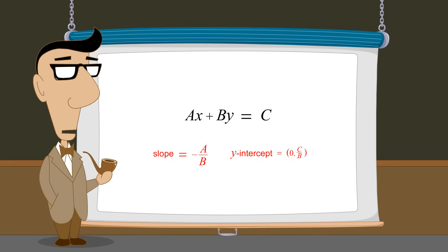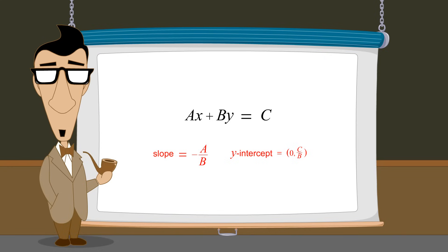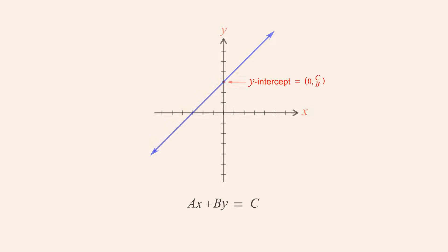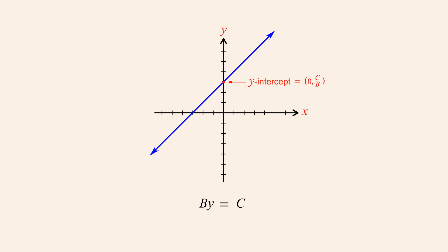We now have expressions which tell us the slope and y-intercept of a line written in standard form. But there is another method by which we can determine both the x and y-intercepts. We know that the y-intercept's x-coordinate is always zero, because the y-intercept is the point where the graph intersects the y-axis, and every point on the y-axis has an x-coordinate of zero. So another way of determining the y-intercept is to set x to zero in the equation and see what the resulting value of y is. Setting x to zero causes the x-term to vanish. Then, dividing both sides by b, we see once again that the y-coordinate of the y-intercept is equal to c over b.